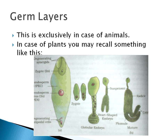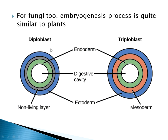In plants, the embryo develops forming a globular embryo, then a heart-shaped embryo, and then matures — it does not form any germ layers. In fungi the case is similar to that of plants. Now there are two terms: diploblastic and triploblastic. When the zygote starts dividing itself, we find at the very beginning a specific arrangement.